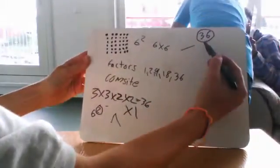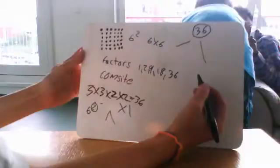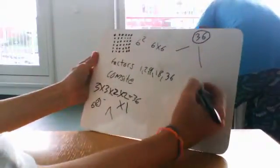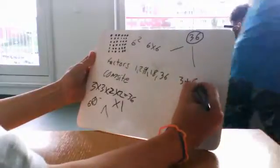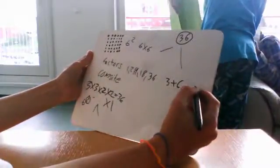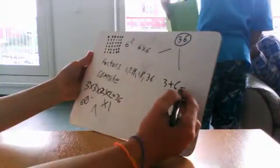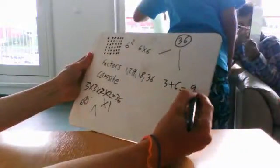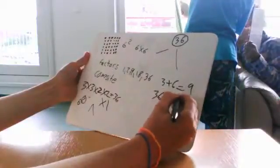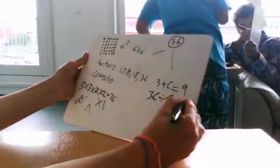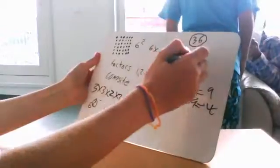36 is divisible because if you break it down, 3 plus 6 equals 9. 36 divided by 9 equals 4. 36 is divisible.